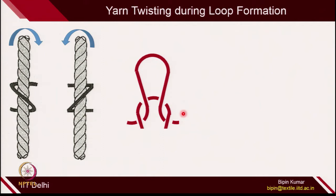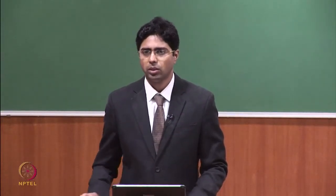Naturally, because of the twist variation in the loop — on the left side and right side — the loop cannot remain stable. On the left side there is additional S twist and on the right side of the loop there is additional Z twist. Because of that, the course does not look perfectly horizontal. It will make a certain angle because all the loops in that course will bend. This is called spirality.